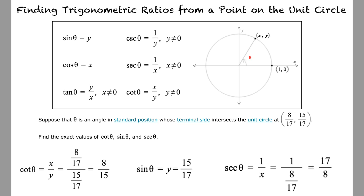Thus, our final answers are: cotangent of theta equals 8/15, sine of theta equals 15/17, and secant of theta equals 17/8. I think I'm starting to understand how to use the chart of trigonometric identities to solve our trigonometric ratios, but can we do another example just to be sure?